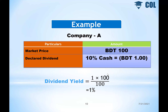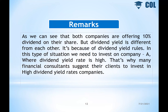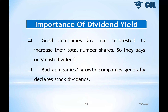For example, if a company declares 10% dividend but the market price is 10 times the face value, the dividend yield becomes only 1%. Similarly, if company B has a 10% dividend declared but the market price is 200 taka, then the dividend yield becomes only 0.5% — half a percent. So whenever the market price increases, the dividend yield decreases. A company offering 10% dividend at a market price of 200 taka has a dividend yield of only 0.5%.